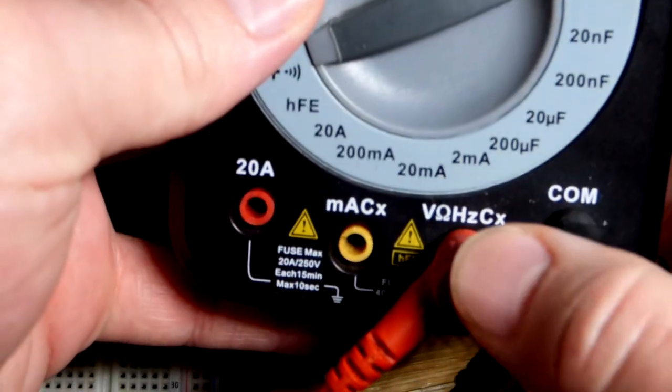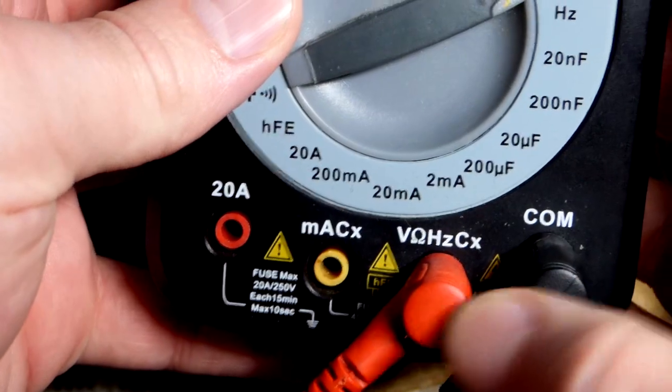In this video we're going to measure resistance with a meter that has ranges. First, make sure the red probe is where the omega symbol is for resistance, and the black probe is at COM.